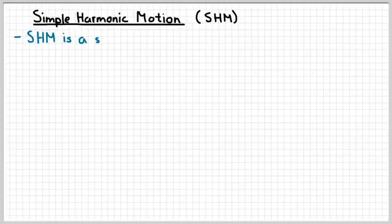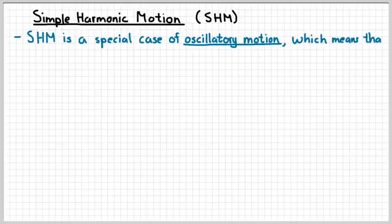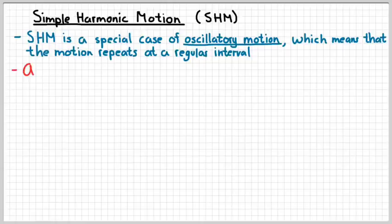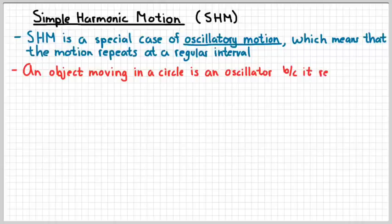So what is simple harmonic motion? Simple harmonic motion is a special case of oscillatory motion. Oscillatory motion means that the motion repeats itself at a regular time interval. So a good example of oscillatory motion is something moving in a circle. We consider that to be an oscillator because it repeats at a regular interval.